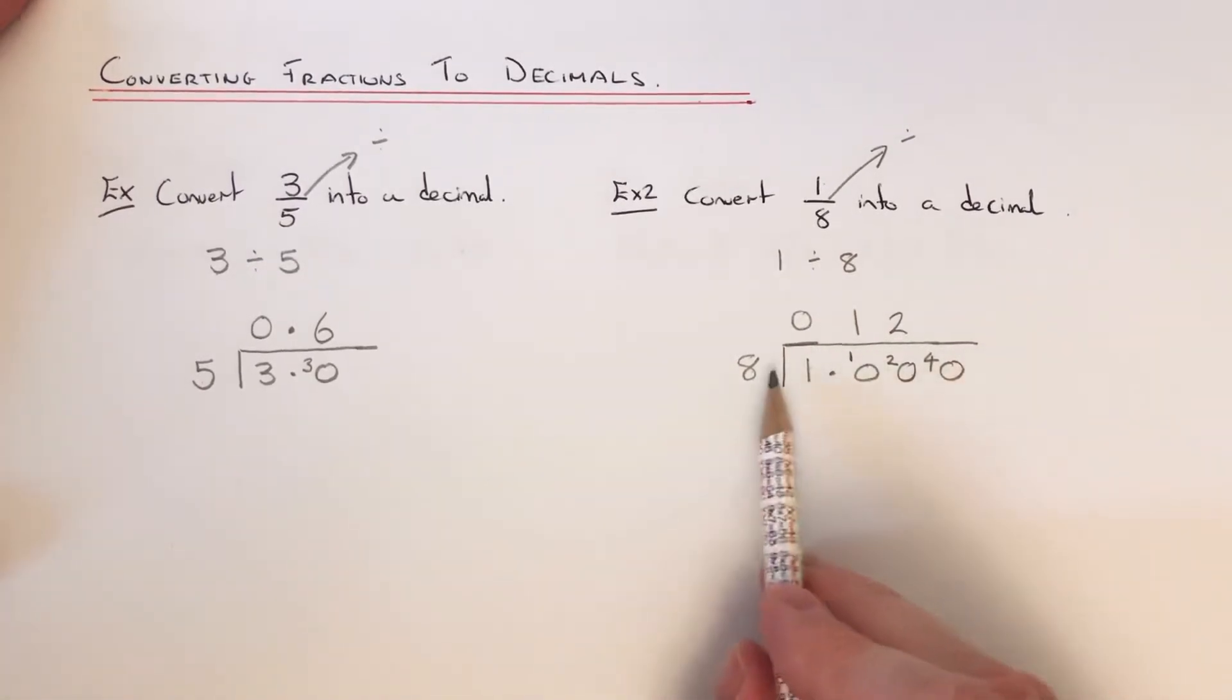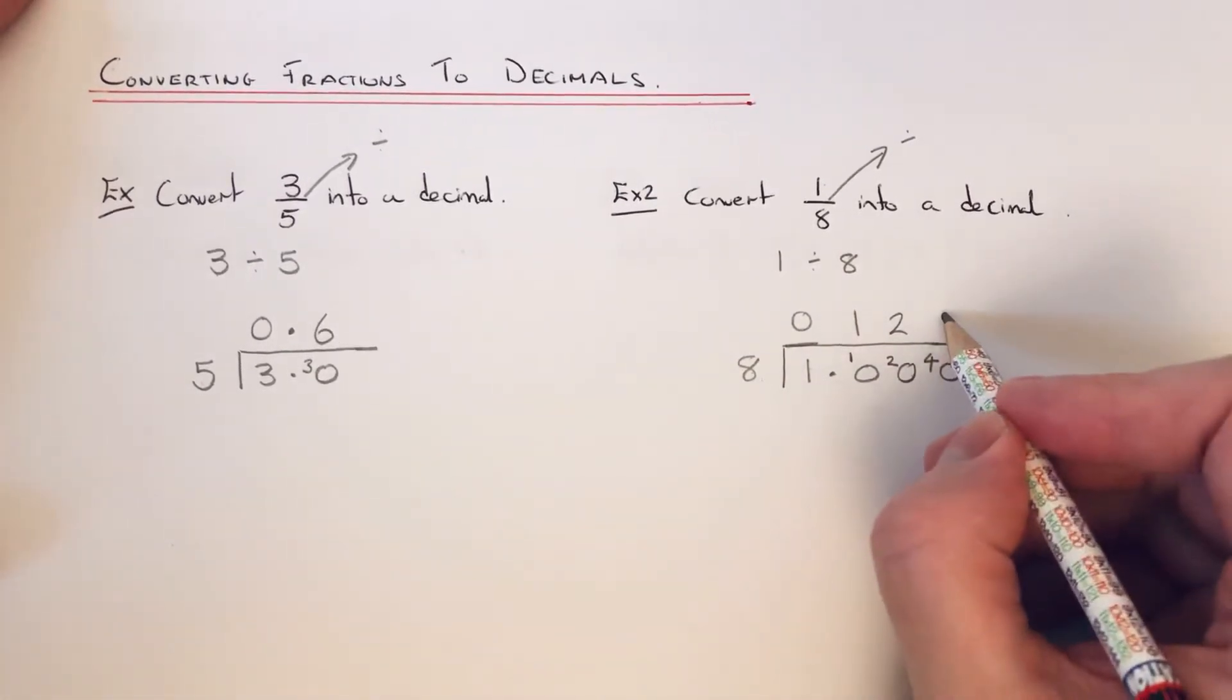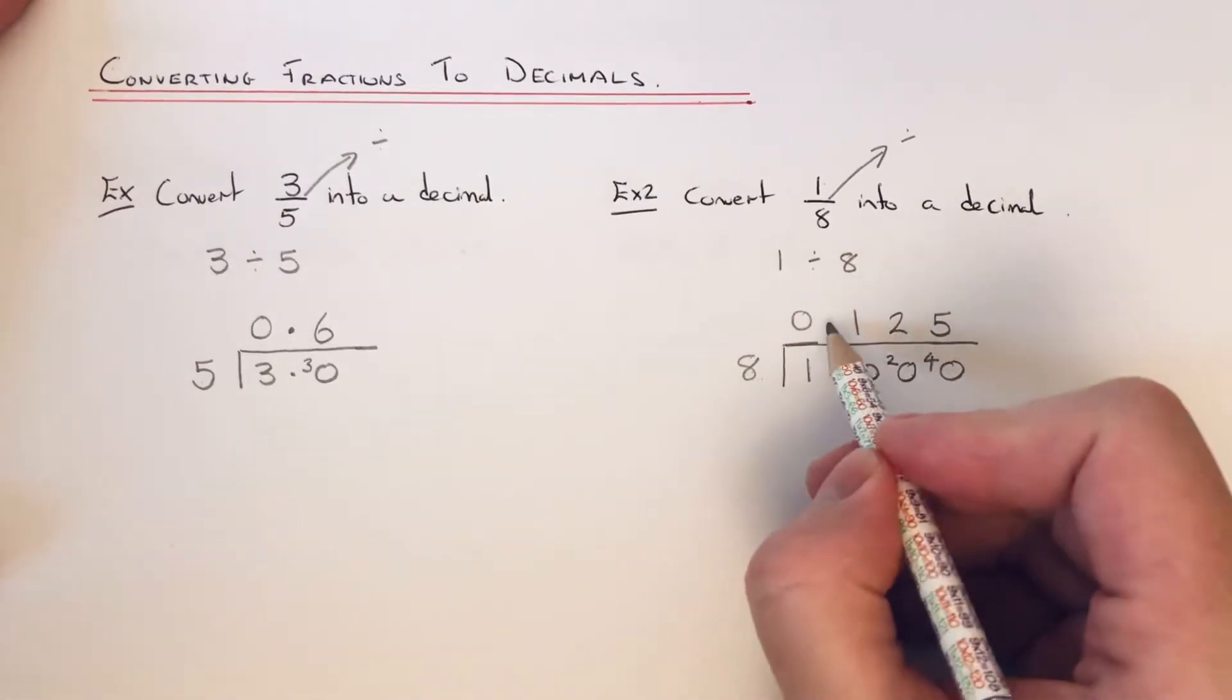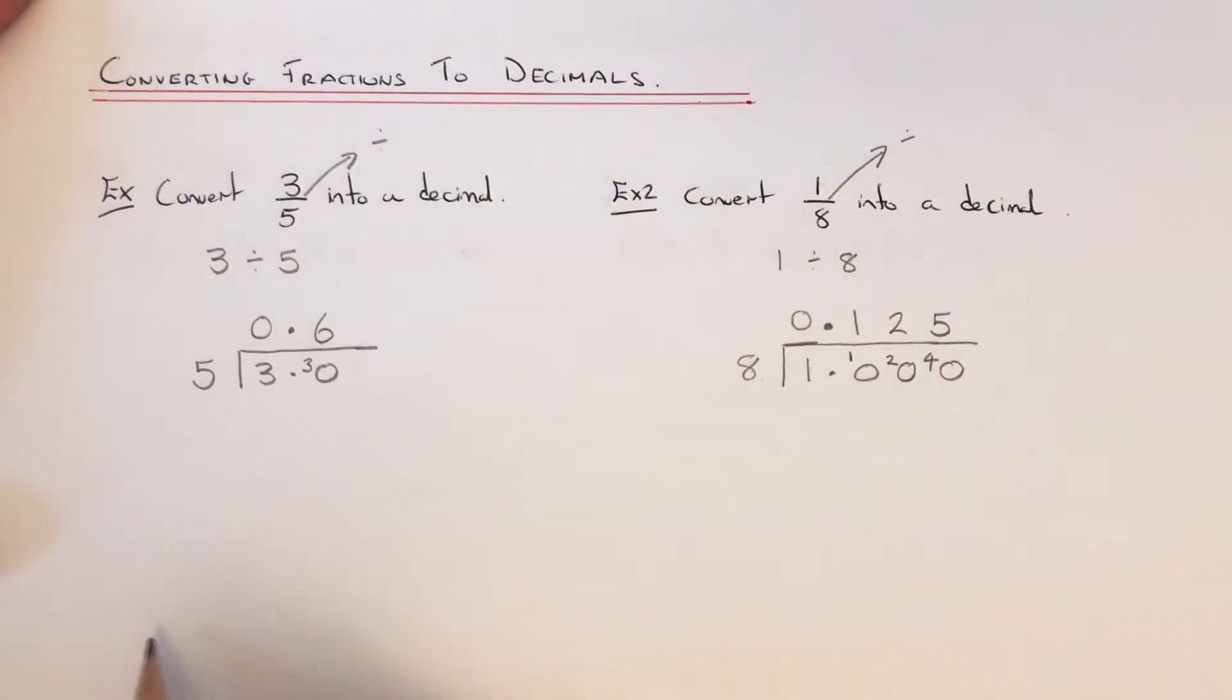Then do 40 divided by 8, which is 5. Don't forget your decimal point, so 1/8 is the same as 0.125.